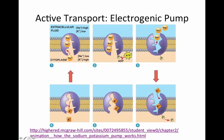Active transport allows movement against the concentration gradient. We're going to look at how potassium moves from its low concentration extracellularly to high, and how sodium, using active transport, goes from the inside of the cell to the outside. In this transport mechanism, using this electrogenic pump, there is an exchange of three sodium ions for two potassium ions. Sodium binds to its active site within this transmembrane protein.